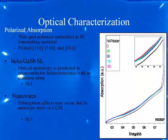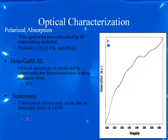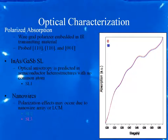It looks like our nanowires are not going to give us dramatic performance improvements. However, we did see some different response from the structure grown on the aluminum antimonide buffer — transitions were still present at different orientations because of the different strain in the layers, whereas with the other structures they were washed out. Even with polarization along different directions, we still didn't see great enhancement in the optical performance of the system.